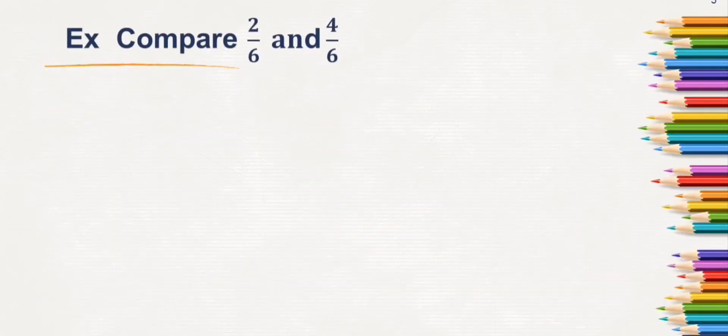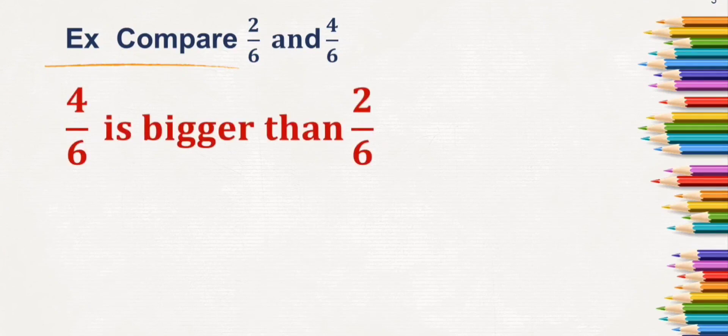Example: compare 2 by 6 and 4 by 6. I will say 4 by 6 is greater than 2 by 6. Why? Because it is a like fraction. Students, we have understood the difference between like fractions and unlike fractions in our previous video. If you have not watched the video, please watch. I will leave the link in the description box.